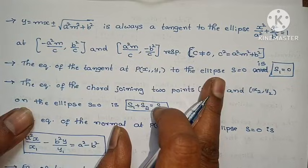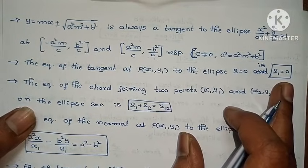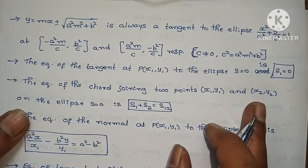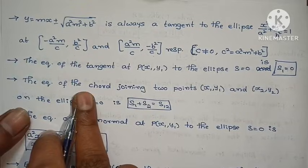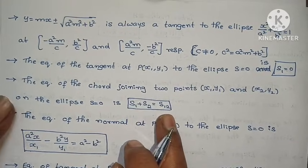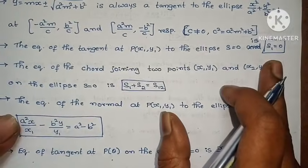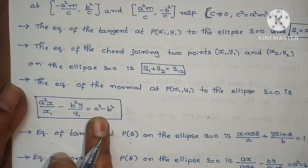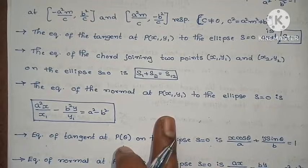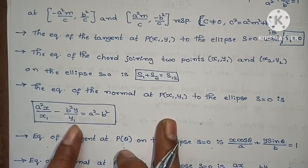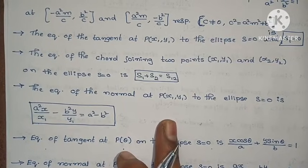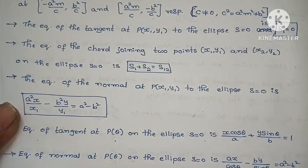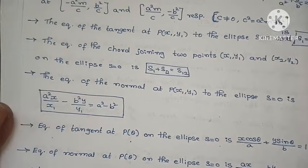Equation of a tangent: S1 equals to zero. Equation of chord of contact for two points (x1, y1) and (x2, y2) on the ellipse: S1 plus S2 equals to S12. Equation of normal: a²x by x1 minus b²y by y1 equals to a² minus b². These are important formulas, but due to time constraints proofs are not explained here — just remember the formulas to solve 4-mark problems.